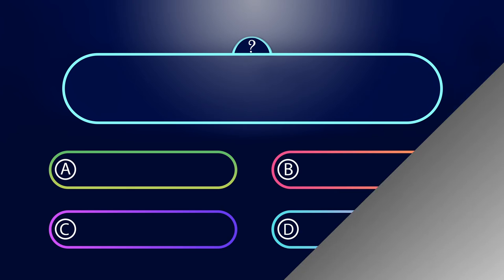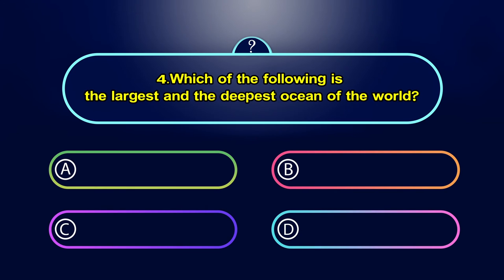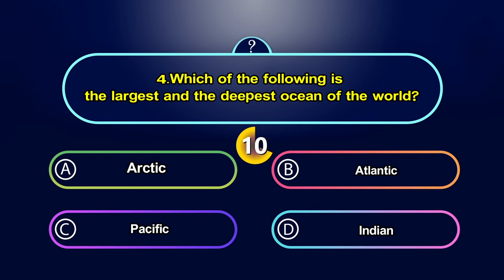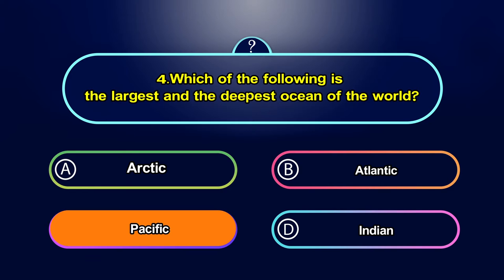Which of the following is the largest and the deepest ocean of the world? Option A. Arctic, Option B. Atlantic, Option C. Pacific, Option D. Indian. Your time starts now. The answer is C. Pacific.